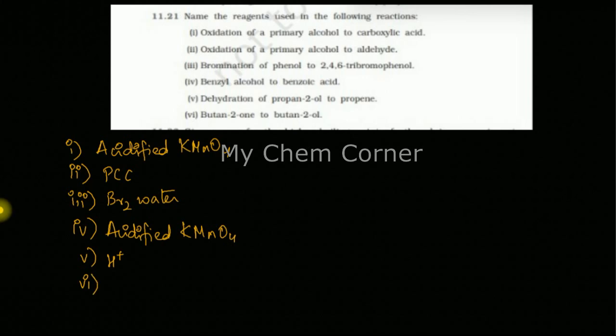The last one is butane-2-one to butane-2-ol. So ketonic group to an alcoholic group. In this case you can either use NaBH4 or you can use LAH which is lithium aluminium hydride because here reduction is taking place. An oxygen double bonded is moving to a single bonded oxygen with a hydrogen on it. So that means a reduction is taking place. So for that you can use any one of these reagents which will help you cause reduction.